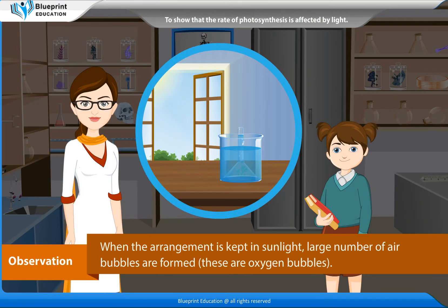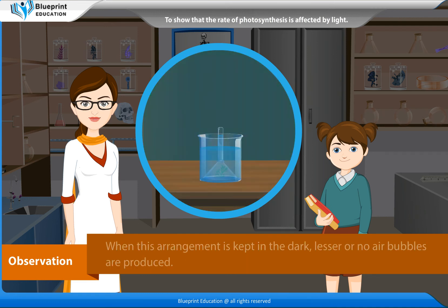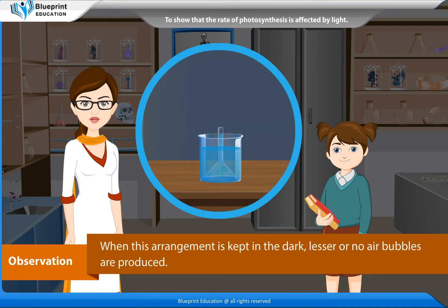Observations: When the arrangement is kept in sunlight, a large number of air bubbles are formed. These are oxygen bubbles. When this arrangement is kept in the dark, lesser or no air bubbles are produced.